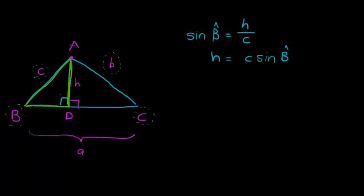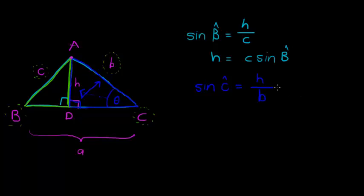Now let's work in the other triangle and write H in a different way. The triangle is turned around: the observed angle is C, H is the opposite side, and the hypotenuse is now b, because the hypotenuse is the side opposite the 90 degrees. So sine of angle C equals H over b. Multiplying both sides by b gives us H equals b times sine of angle C.